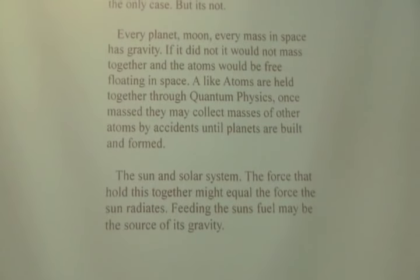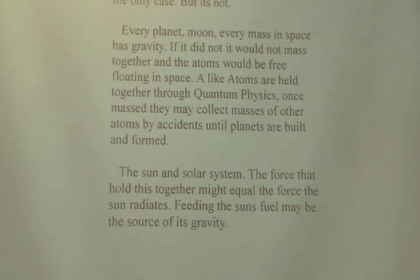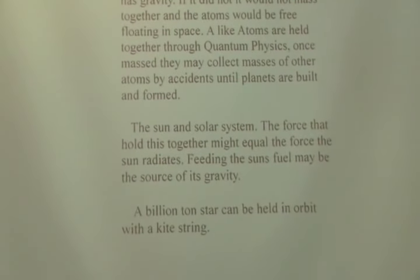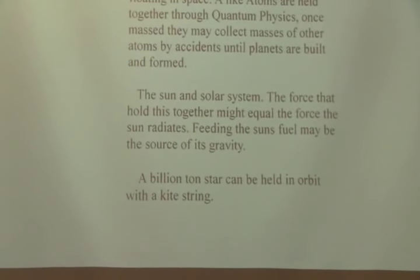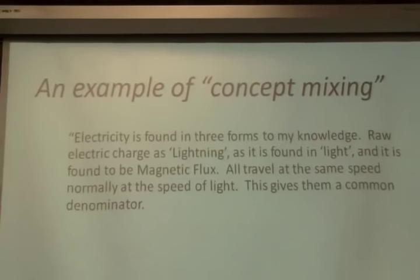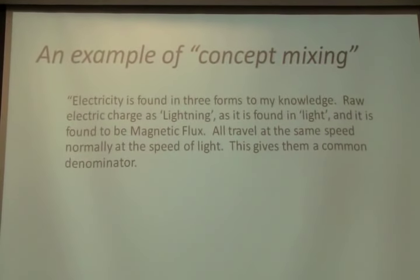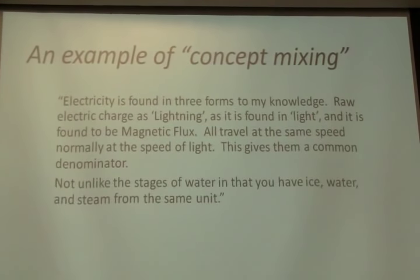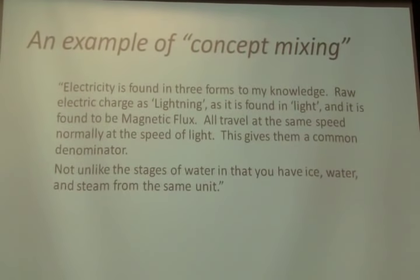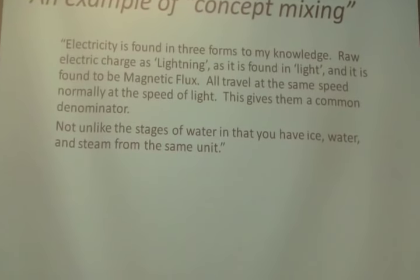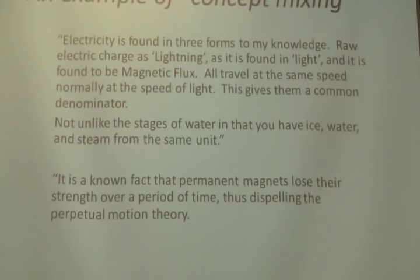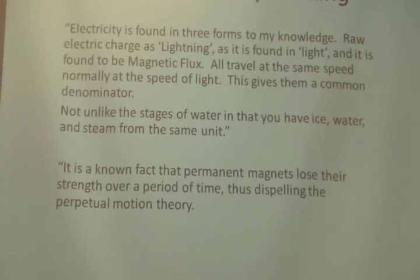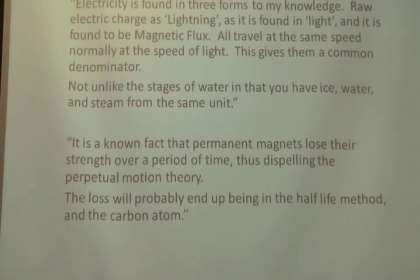Okay. The sun and solar system, period. The force that holds this together might equal the force the sun radiates. Feeding the sun's fuel may be the source of its gravity. And then, a billion-ton star can be called in orbit with a kite string. This is word salad. Another example of what I call concept mixing. Electricity is found in three forms to my knowledge: raw electric charge as lightning, as it is found in light, and it is found to be magnetic flux. All travel at the same speed, normally at the speed of light. This gives them a common denominator. Not unlike the stages of water, in which you have ice, water, and steam from the same unit. Again, three things, three other things. They must be connected somehow.